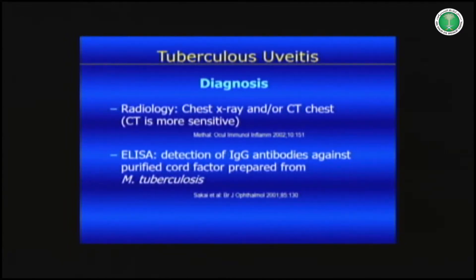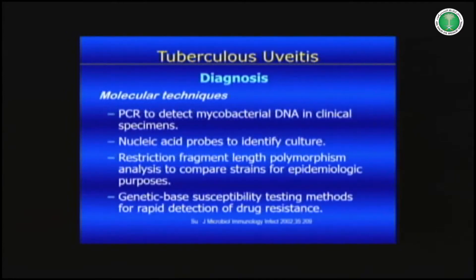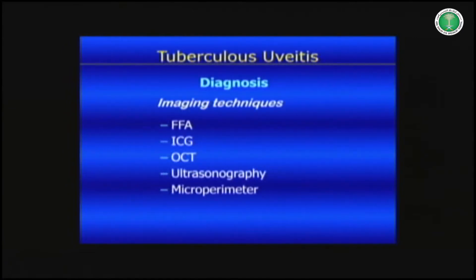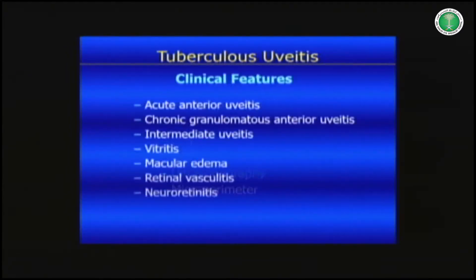You need to do chest imaging — we prefer CT chest rather than X-ray. Our Indian colleagues talk a lot about PCR, however it is not very reliable and sensitivity is very low. For imaging, we use fluorescein angiography, ICG — which we discussed in the CTR this morning — OCT for macular edema, ultrasonography, and microperimetry.